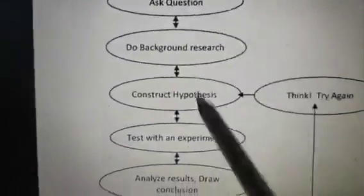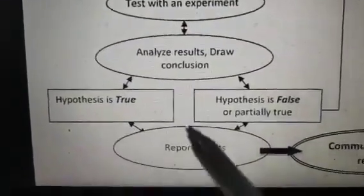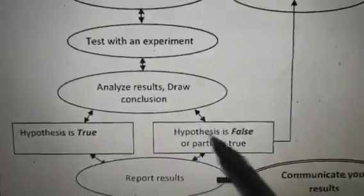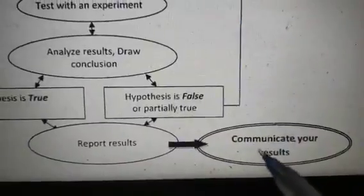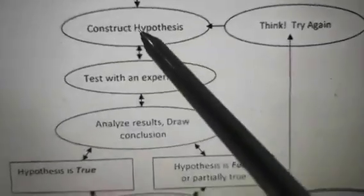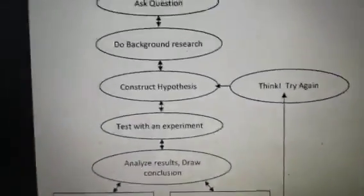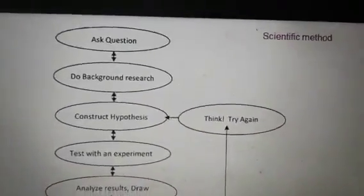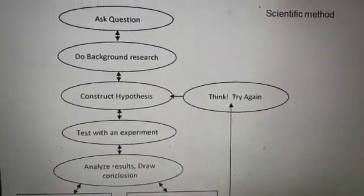After the fifth step, if your hypothesis is true, you report and the result is accepted. But if the hypothesis is false or partially true, you communicate the result and then think and try again, constructing your hypothesis in a different way. This is how the scientific approach works, and this is the difference between positivism and the scientific approach. Thank you students, and prepare notes accordingly.